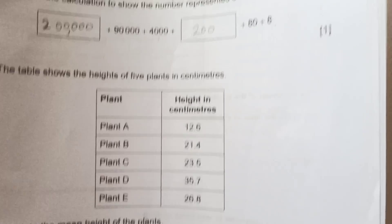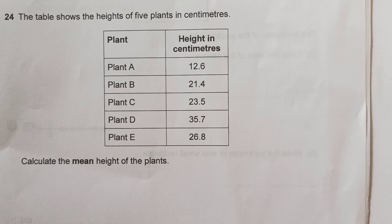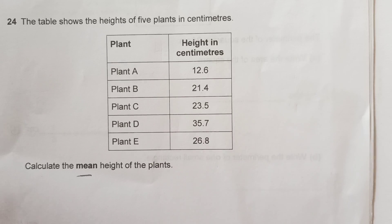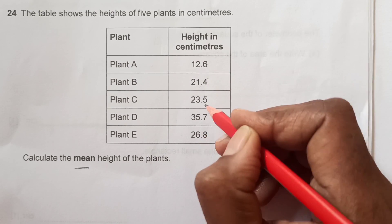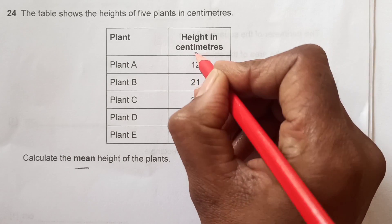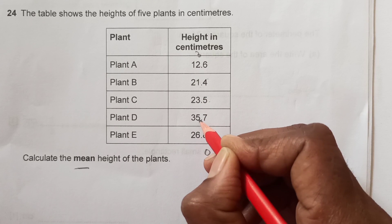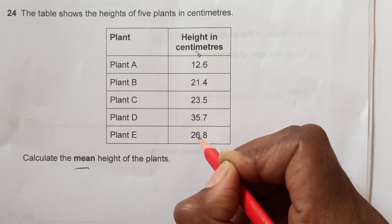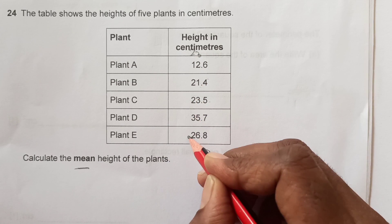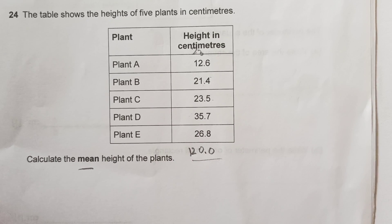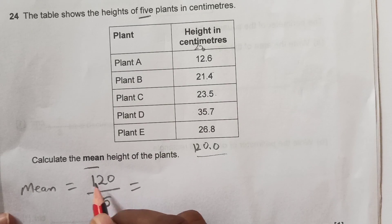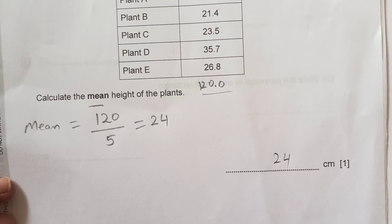Number 24. The table shows the heights of 5 plants in centimetres — Plant A through Plant E. Calculate the mean height. We add all of them and divide by 5. Adding: 6 + 4 = 10, + 5 = 15, + 7 = 22, + 8 = 30... the total comes to 120. For the mean we take 120 divided by 5, which gives 24. So the answer is 24 centimetres.